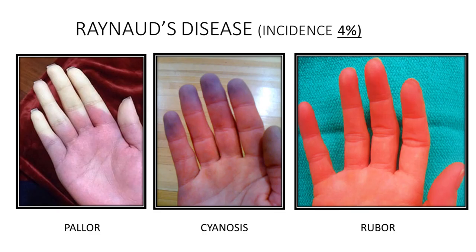The first vasospastic disorder is Raynaud's disease — a vasospastic disorder affecting young females with an incidence of around 4%. There is intense response to certain stimuli such as cold weather, stressful conditions, or exposure to vibrating tools, producing vasospasm. This vasospasm occurs to some degree in all individuals, but in susceptible young females it is severe enough to produce pallor of the fingers.